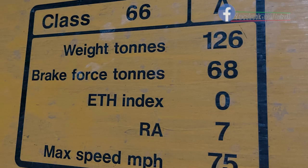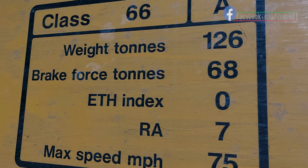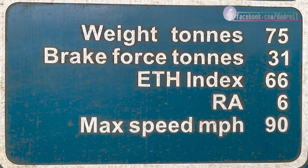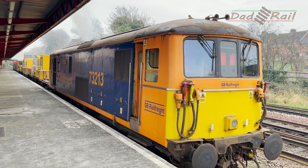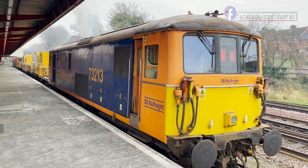Moving on we have our ETH rating — that's Electrical Train Heating, sometimes called head-end power. This is the amount of current that the locomotive can provide to coaching stock to run things such as lighting and heating, i.e. hotel services. You can see here that the class 66 can provide nothing, whereas this class 73 has an index of 66. A single ETH index is the equivalent of 5 kilowatts of power, so our little class 73 can provide a maximum of 330 kilowatts of power.